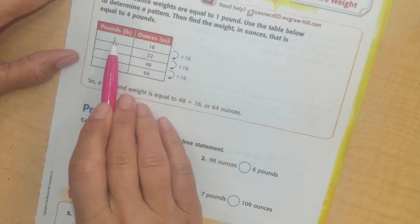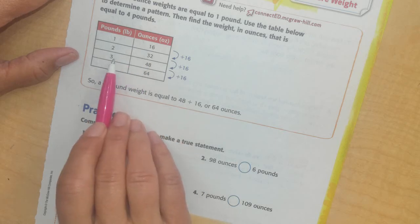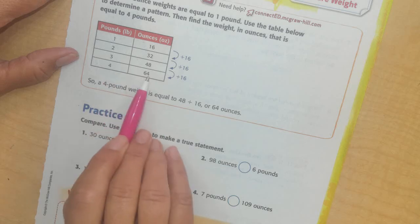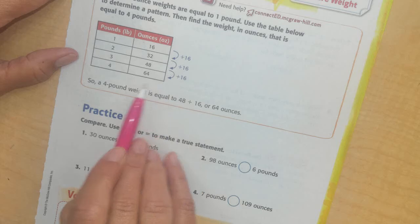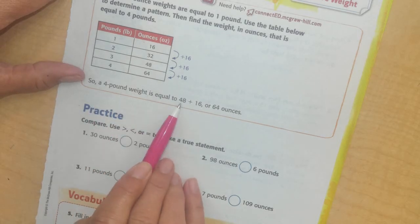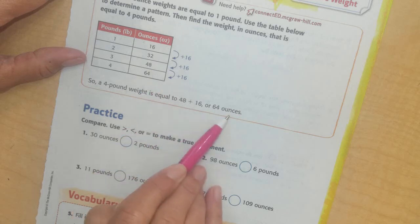Alright, so here's my 1 pound is 16 ounces, 2 pounds are 32 ounces, 3 pounds are 48 ounces, 4 pounds are 64 ounces. Every time I'm just adding 16 more. So a 4 pound weight is equal to 48, plus the 16, or 64 ounces.